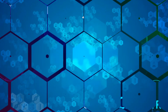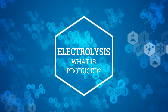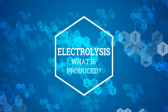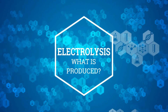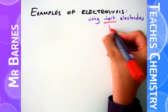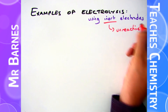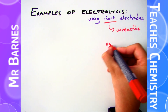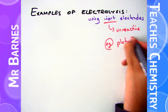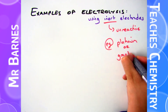Hi guys, welcome to this video which is going to look at what is formed at the electrodes during electrolysis. The first thing to note is that we're using inert electrodes here. Inert means unreactive, which means they don't take part in the reaction. Examples of those are graphite and platinum.